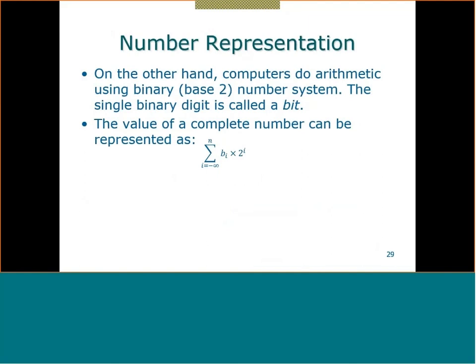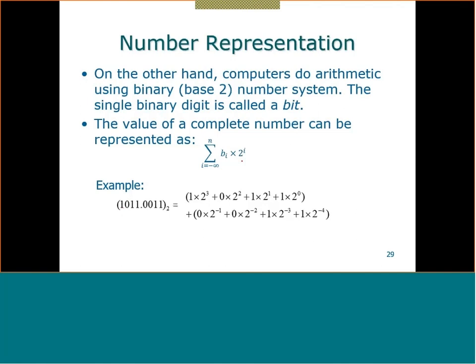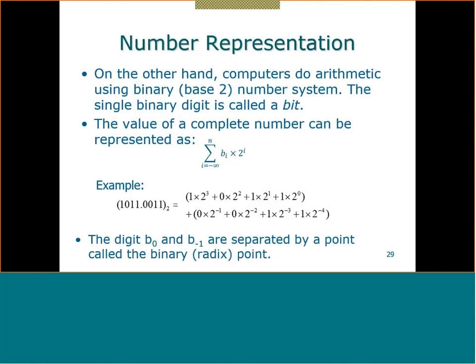For example, the number 1011.0011 in base 2 equals: 1×2³ plus 1×2² plus etc., to convert from binary to decimal. Also, as a vocabulary note: between B₀ and B₋₁ — that dot — we don't call it a decimal point in binary. We call it the radix.